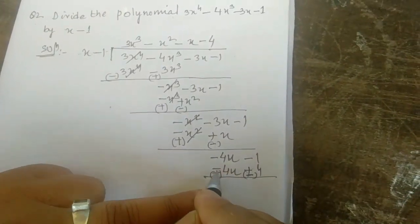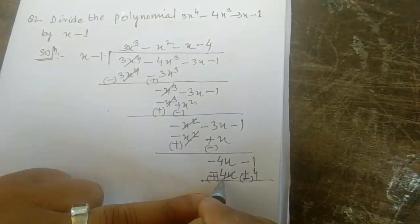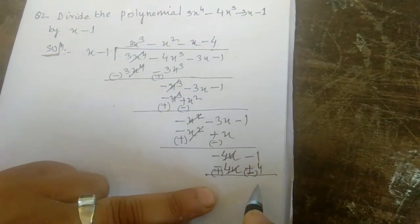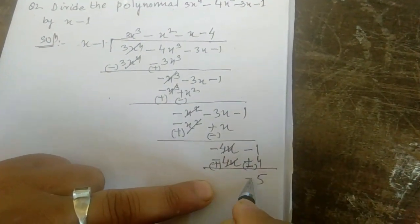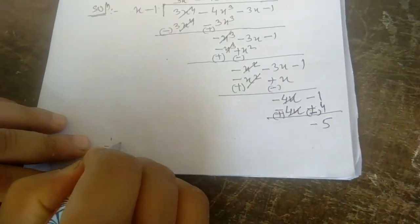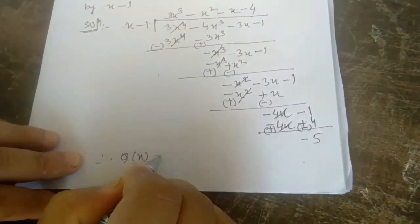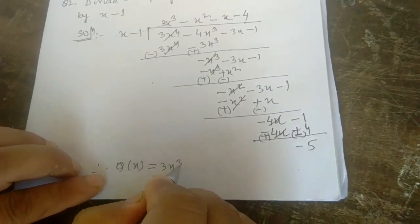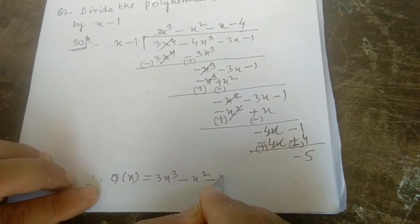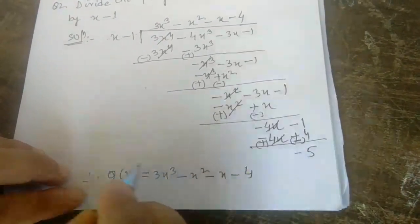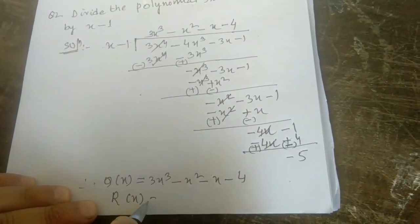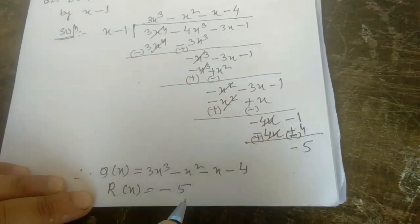Plus becomes minus, minus becomes plus. Positive and negative cancel. Here both are negative, so we add: 1 + 4 = 5, both negative so -5. Therefore, quotient q(x) = 3x³ - x² - x - 4 and remainder r(x) = -5.